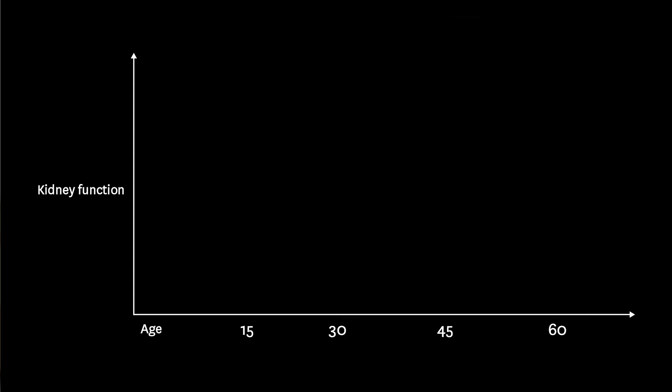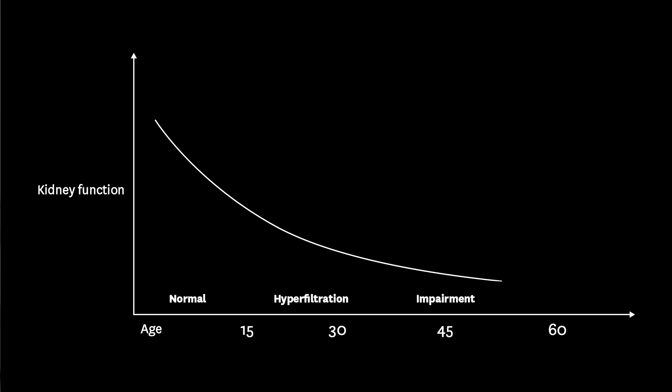The disease mostly affects people after the age of 50, depending upon the particular mutations in the two genes, PKD1 and PKD2, that are associated with the disease. Those mutations will affect the etiology and the onset of the disease.